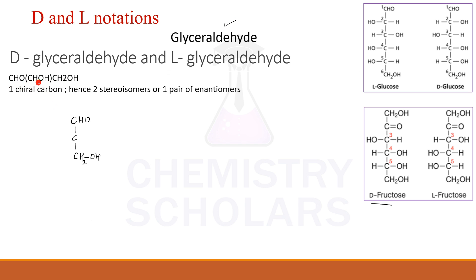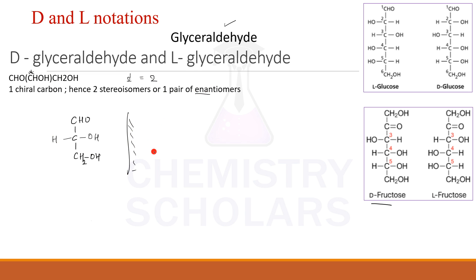It's an aldotriose — three carbon atoms. The central carbon is having an OH group, which I will keep on the right hand side. Because it has one chiral atom, the number of stereoisomers will be two. So there are two stereoisomers. This is one of the stereoisomers. The second stereoisomer will of course be the mirror image, with OH on the left hand side. So these are the two enantiomers.